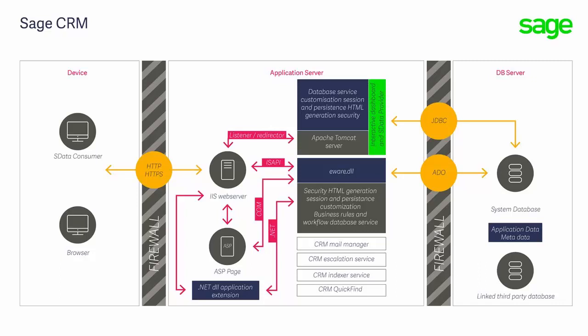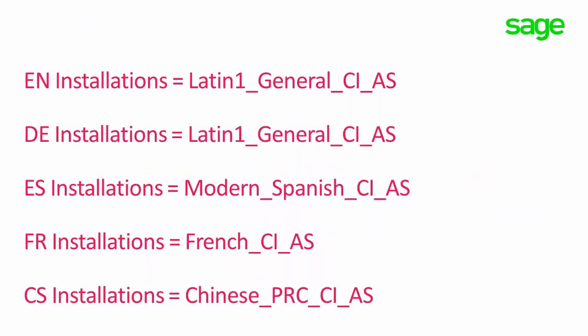The eWare DLL part of the system uses ADO when interacting with the database, and the Java-based features use JDBC. This means that when using MSSQL Server installs, TCP/IP must be enabled, and the SQL Server needs to have a case-insensitive collation. Collations specify the rules for how strings of character data are sorted and compared based on the norms of particular languages and locales. A binary notation or a case-sensitive collation is not supported by SageCRM. We typically do not have to worry about the collation on new installs, as CRM does not inherit the default database server collation.